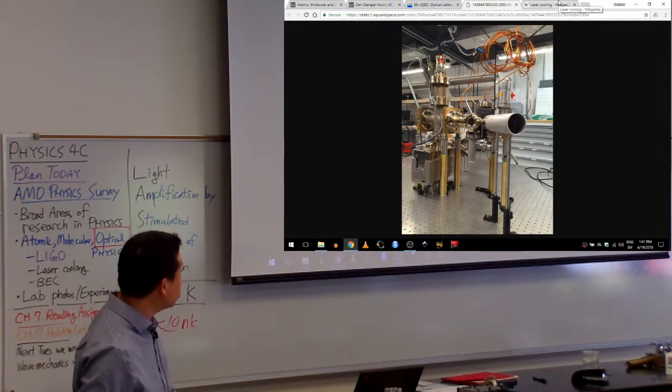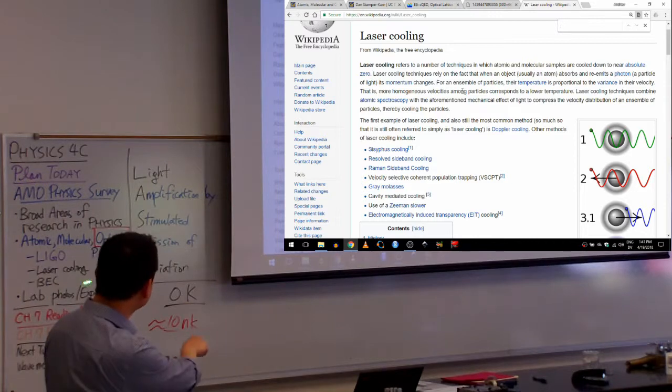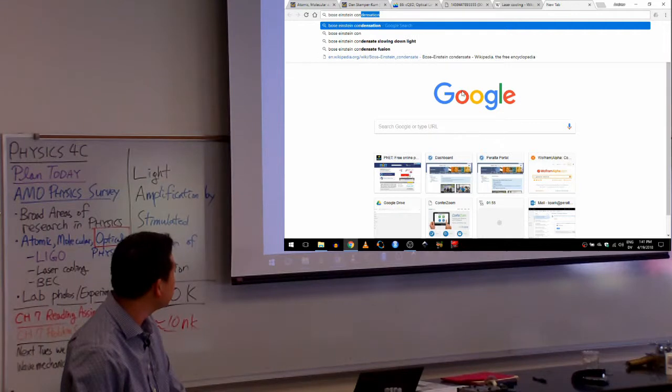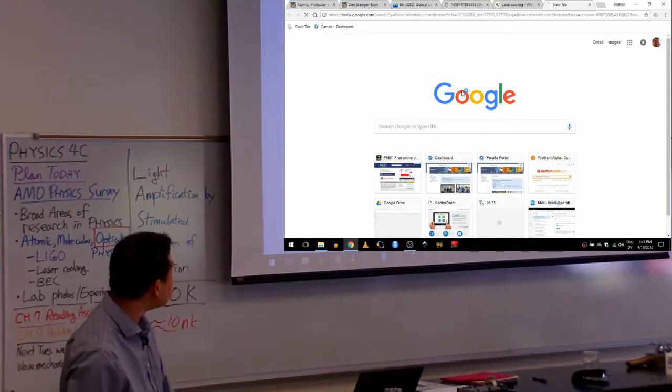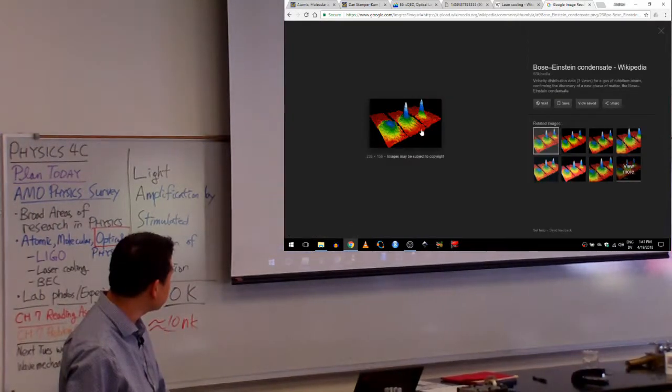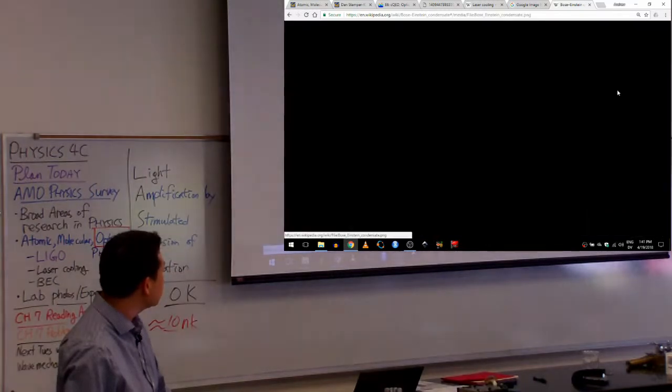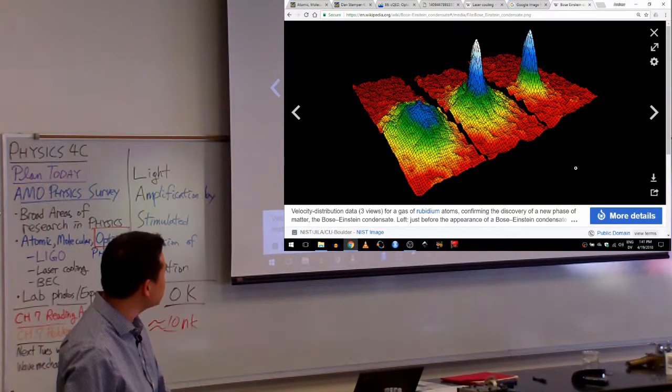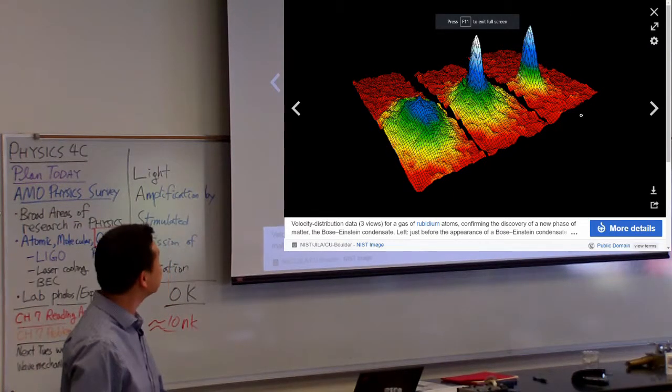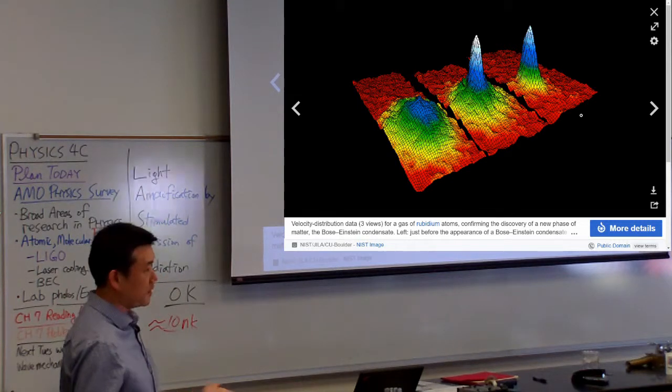But one of the most significant achievements that's been done with laser cooling is in creation of something called Bose-Einstein condensate. That's probably the picture I should show you. They call it a new state of matter. And I guess it is a new state of matter. It's a state of matter that does not exist in nature.